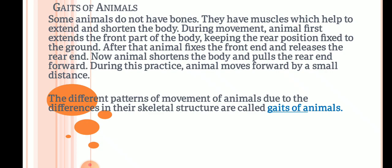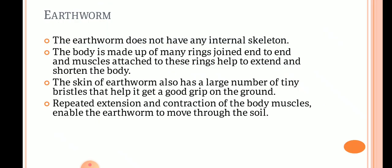Let's take some examples. For example, the earthworm — the earthworm does not have any internal skeleton. Its body is made up of many rings joined end to end, with muscles attached to these rings. When you look at the body of an earthworm, you will see that many rings are connected end to end and muscles extend or shorten these rings.